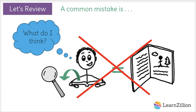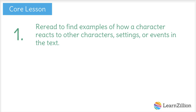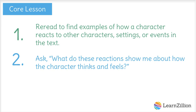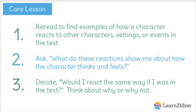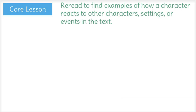In this lesson, we will follow three steps. First, we'll reread to find examples of how a character reacts to other characters, settings, or events in the text. Next, we'll ask, what do these reactions show me about how the character thinks and feels? Third, we'll decide, would I react the same way if I was in the text? Think about why or why not. So my first step is to go back into the text and look for evidence of the speaker reacting to the characters. I'll start with the mouse.